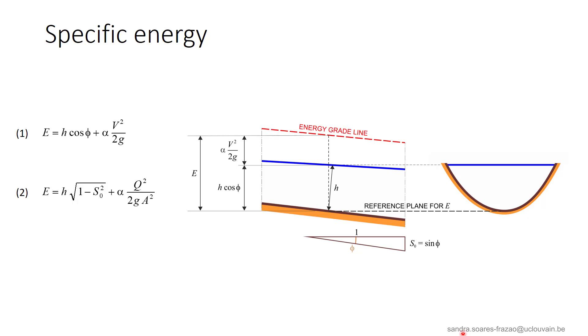Using the definition of the bed slope S0 that is recalled here, we can also write the specific energy like this. It corresponds in fact to the vertical distance between the bed and the energy grade line in a given section, in such a way that we actually have a relation like this one between the key variables. Indeed, the other parameters are unknown or can be deduced from the flow variables. The wetted area A is a direct function of the depth H, S0 is fixed for a given channel, and alpha is usually considered as constant, often close to 1.